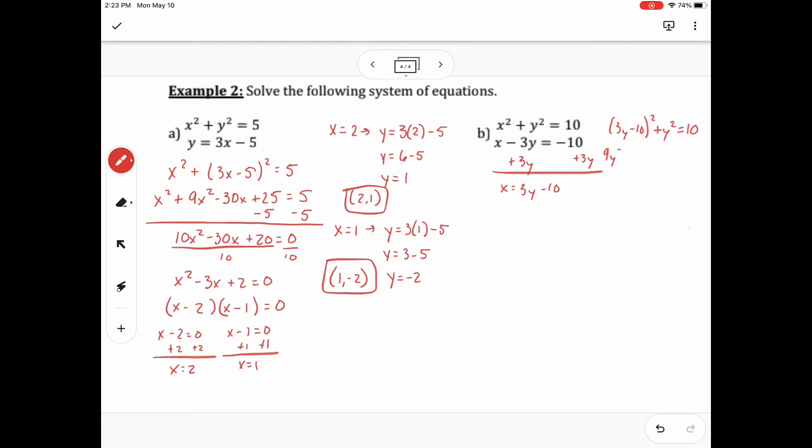And then I'll have to foil that out. That gets me 9y squared minus 60y plus 100 plus y squared equals 10. Subtract the 10 over, put like terms together because I have a 9y squared and a y squared.